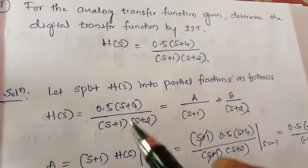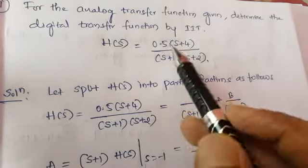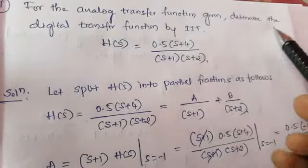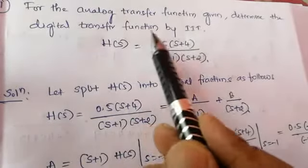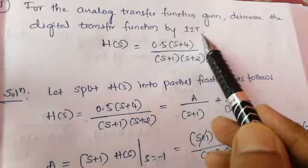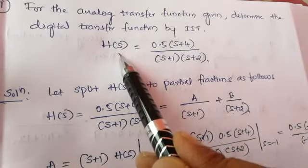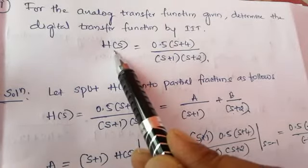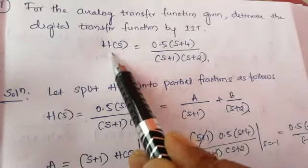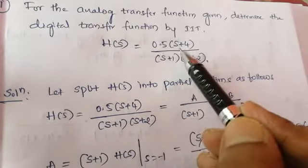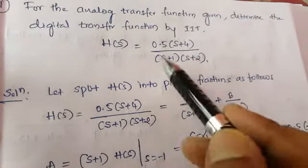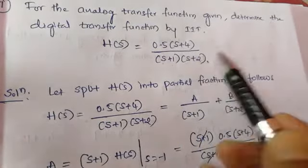Let us take one more example. For the analog transfer function given, determine the digital transfer function by IIT method, that is the impulse invariant transformation method. The transfer function of the given analog filter is H(S) equal to 0.5 multiplied by (S plus 4) divided by (S plus 1) into (S plus 2).